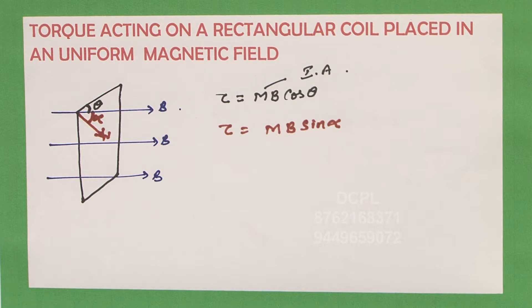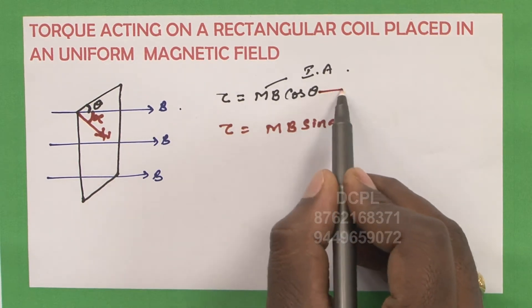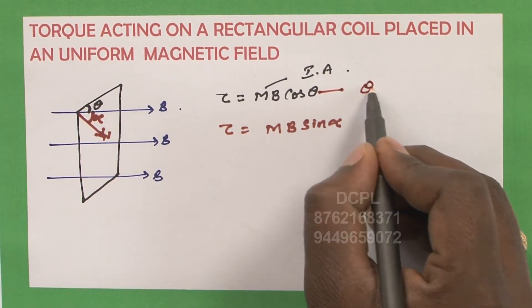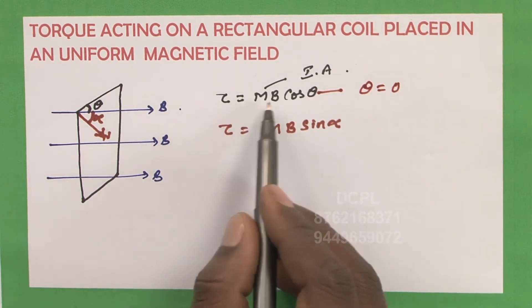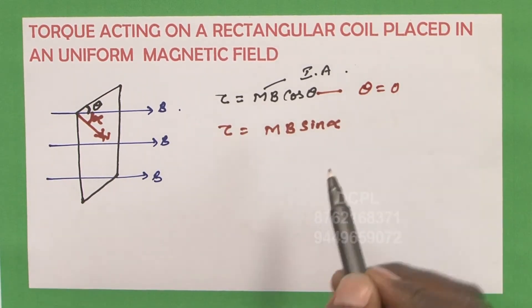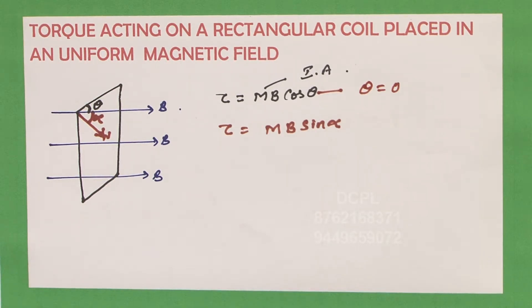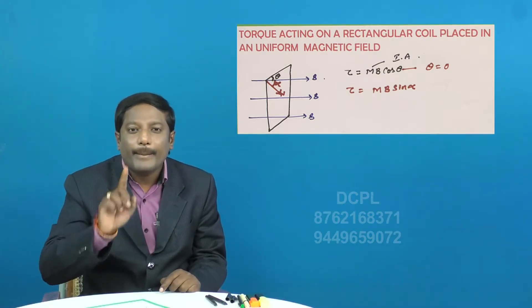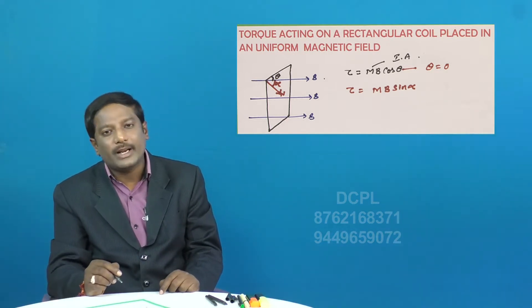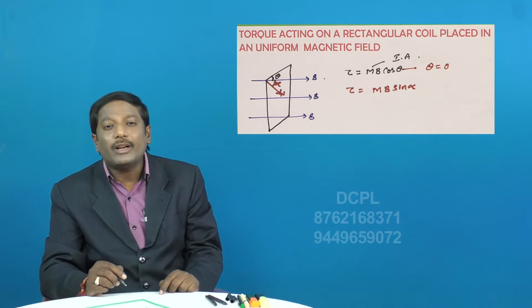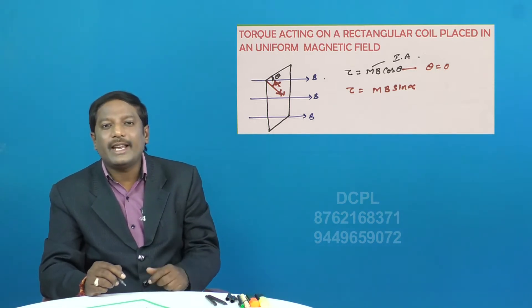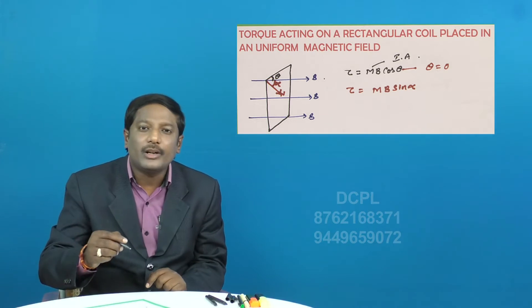When is the torque acting on this rectangular coil maximum and minimum? For the cos theta formula, torque is maximum when theta equals 0, meaning the plane of the coil is perpendicular to the magnetic field, or the normal is parallel to the magnetic field. Torque is minimum when the plane of the coil is parallel to the magnetic field, or the normal is perpendicular to the magnetic field.